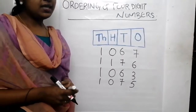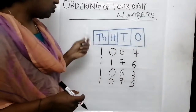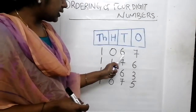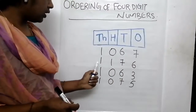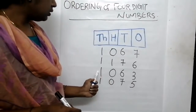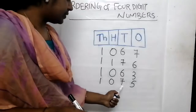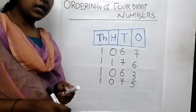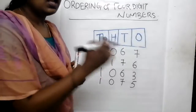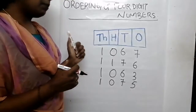We get the order. Now let's take another set of numbers. Look at here - we can write these numbers. Write with me: 1,067, 1,176, 1,063, 1,075. Then we have to arrange these numbers from smallest to largest. So we have to find first which number is smallest.